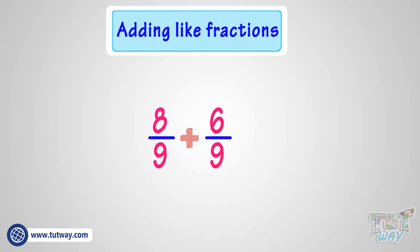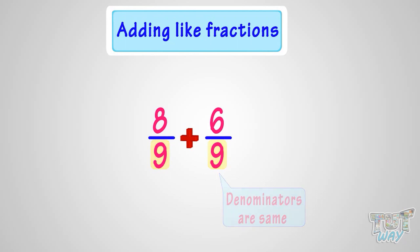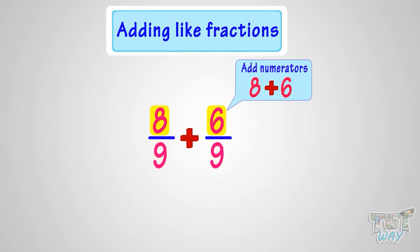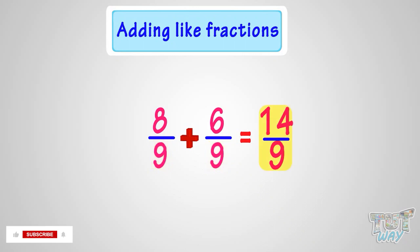Here we have another example. We have to add 8/9 and 6/9. These are like fractions as the denominators are the same. So we just have to add the numerators. Adding the numerators, that is adding 8 and 6, we get 14. The denominator will remain the same. So the sum of 8/9 and 6/9 is 14/9.